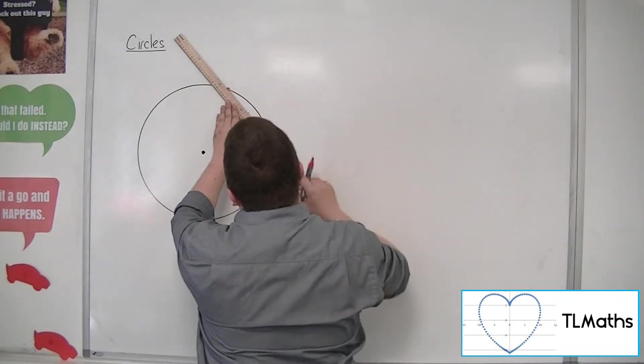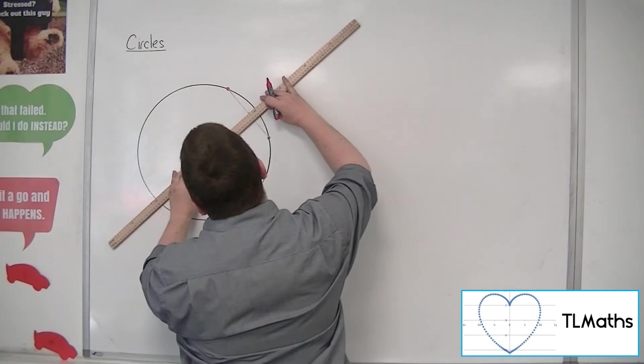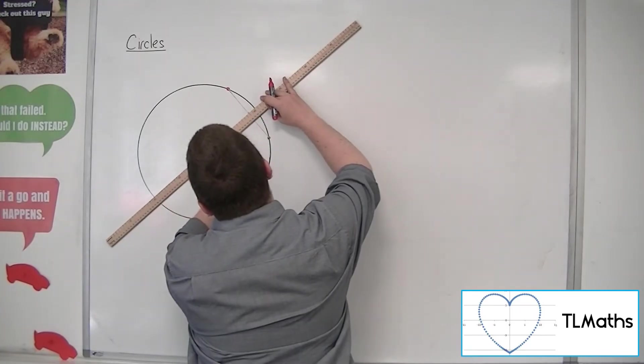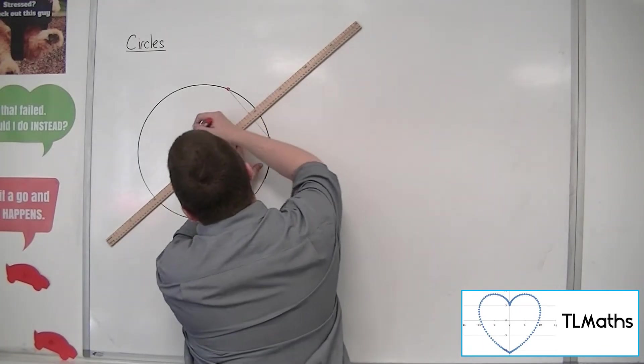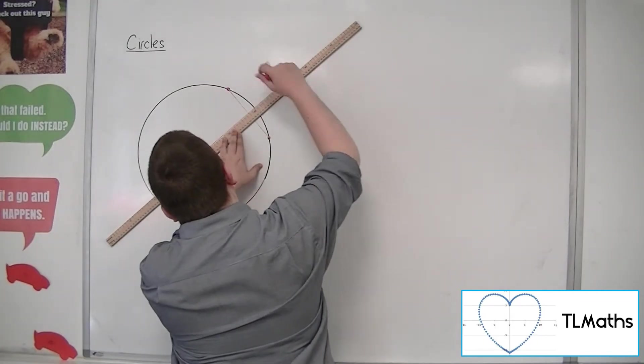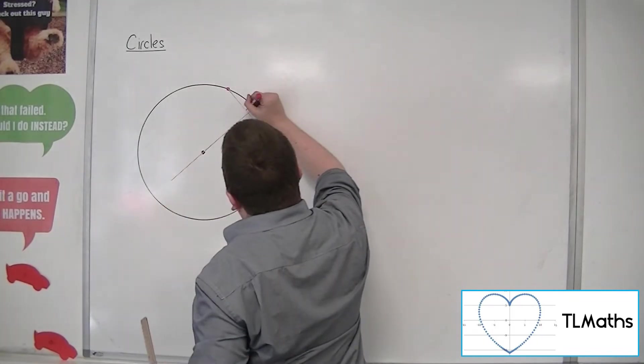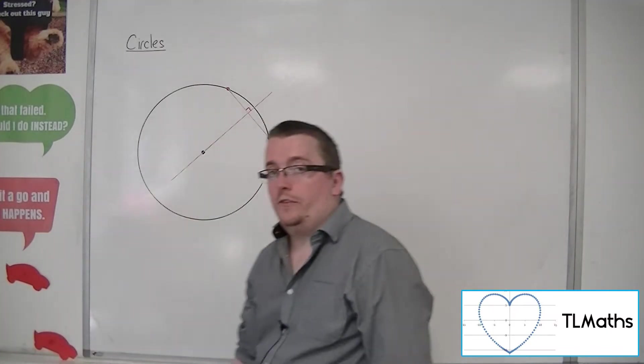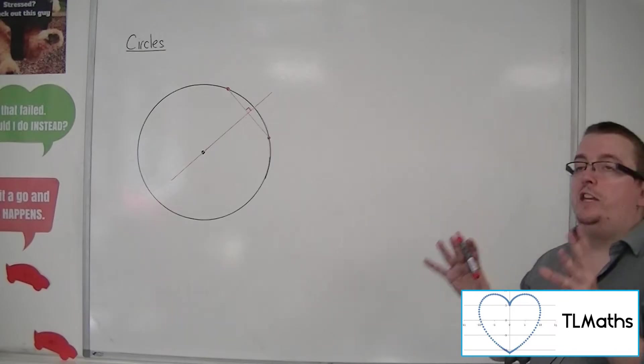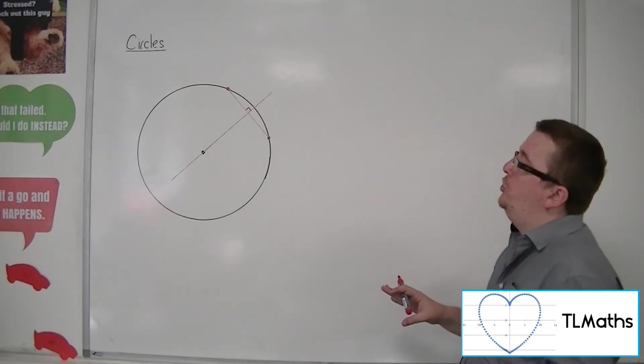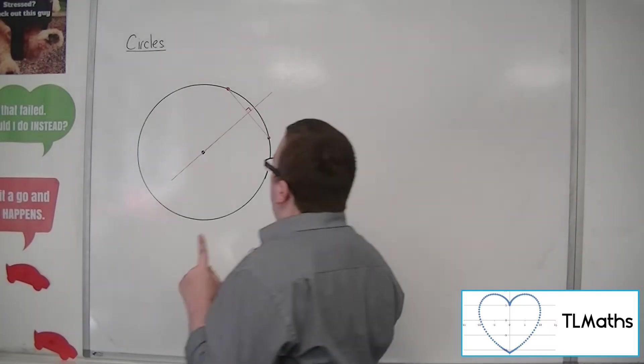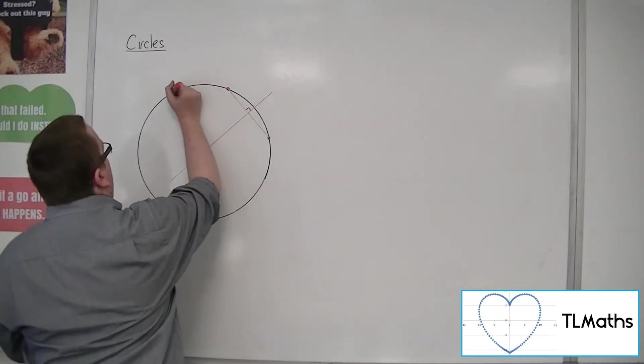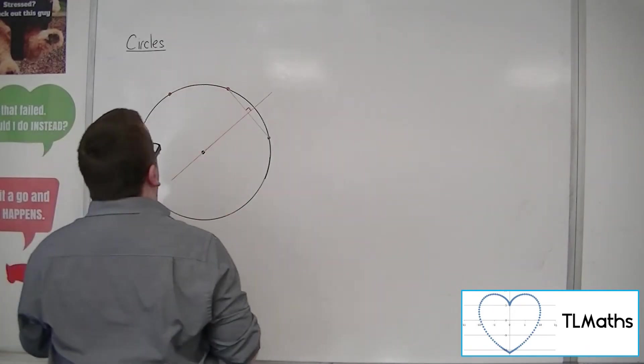you will find that the perpendicular bisector will always travel through the centre of the circle. And this is a very useful bit of information because that means if you just had one more point on the circle,